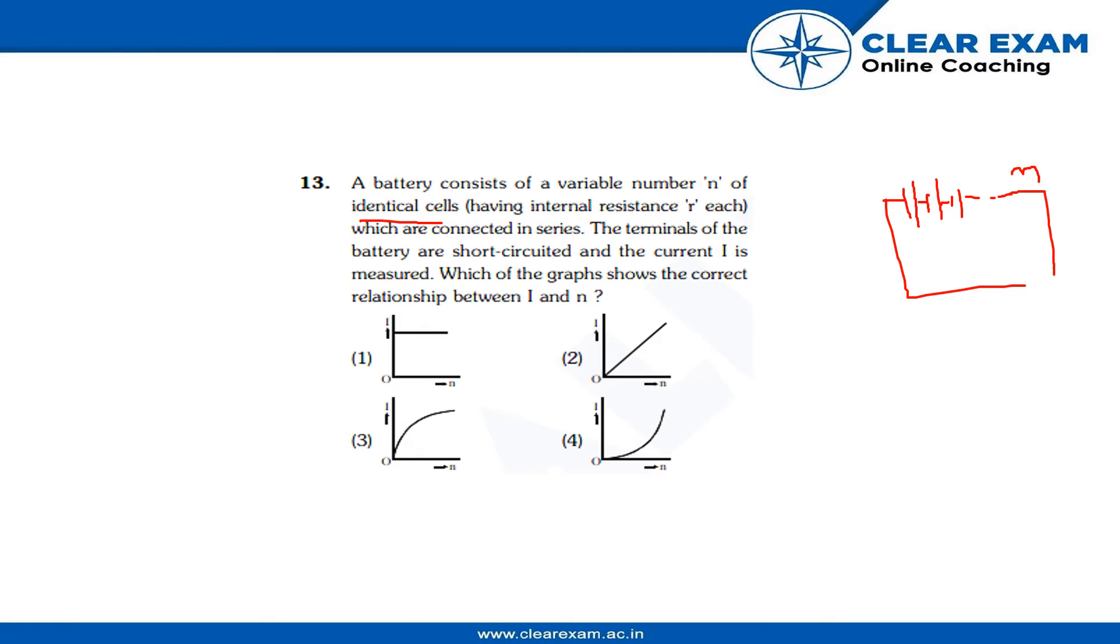And the terminals of the battery are short-circuited and the current i is measured. That is, the ends of the battery are just connected to each other without having any resistance. When we measure the current i, we need to find out and identify the correct graph which shows the relation between i, that is current, and n, that is the number of identical cells.